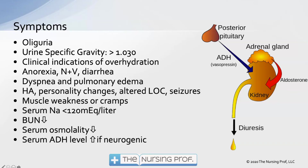In SIADH, the posterior pituitary is releasing too much antidiuretic hormone, so the patient is retaining too much fluid and not diuresing. Symptoms include oliguria and decreased urine output. Urine-specific gravity is greater than 1.030 — concentrated urine. There are clinical signs of over-hydration: dyspnea, pulmonary edema, and dependent edema. Serum sodium is less than 120, with muscle weakness and cramps. BUN and serum osmolality are both decreasing. Serum ADH level may be elevated, but only if the cause is neurogenic.